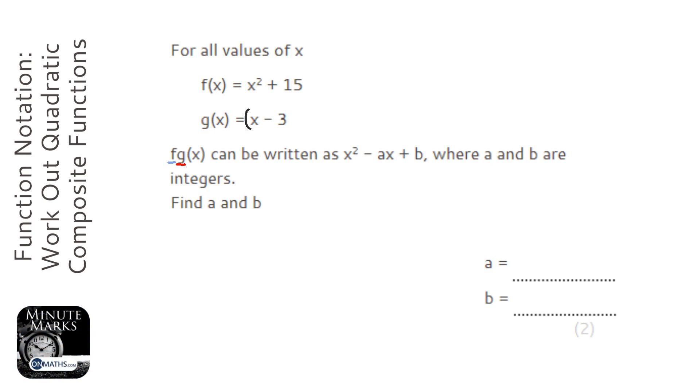Now g is a simple one, it's just minusing 3 from the x, and then we're going to feed that into the function f. So let's do g, which is just x minus 3, and then we're going to replace the x in f with what we're inputting, which is x minus 3.